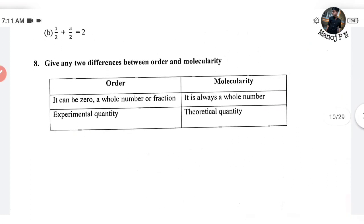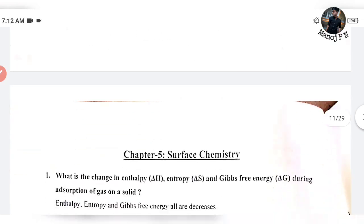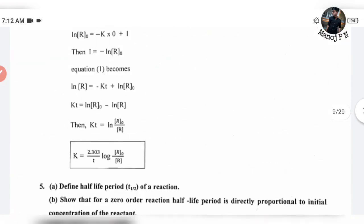Give any two differences between order and molecularity. Order can be 0, a whole number, or a fraction. Molecularity is always a whole number — 2 or more. Order is an experimental quantity, whereas molecularity is a theoretical quantity. And in pseudo first order reaction, order is 1 but molecularity is 2 or more. This will complete your chemical kinetics chapter.